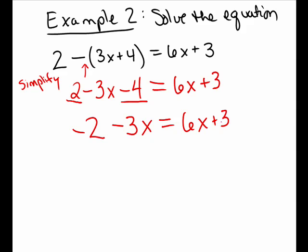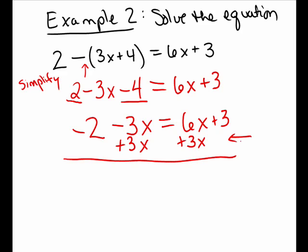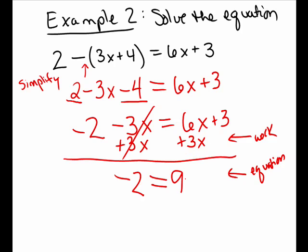Now the left side is simplified and the right side is simplified. I now want to start adding and subtracting to gather together like terms. I'm going to bring all my x's to the right side of the equation. We're subtracting 3x, so to get it out of there, I add 3x on both sides. On the left side, subtracting 3x and adding 3x canceled away to leave negative 2. On the right side, I have 6x plus 3 more x's makes 9x, and I still have a plus 3.